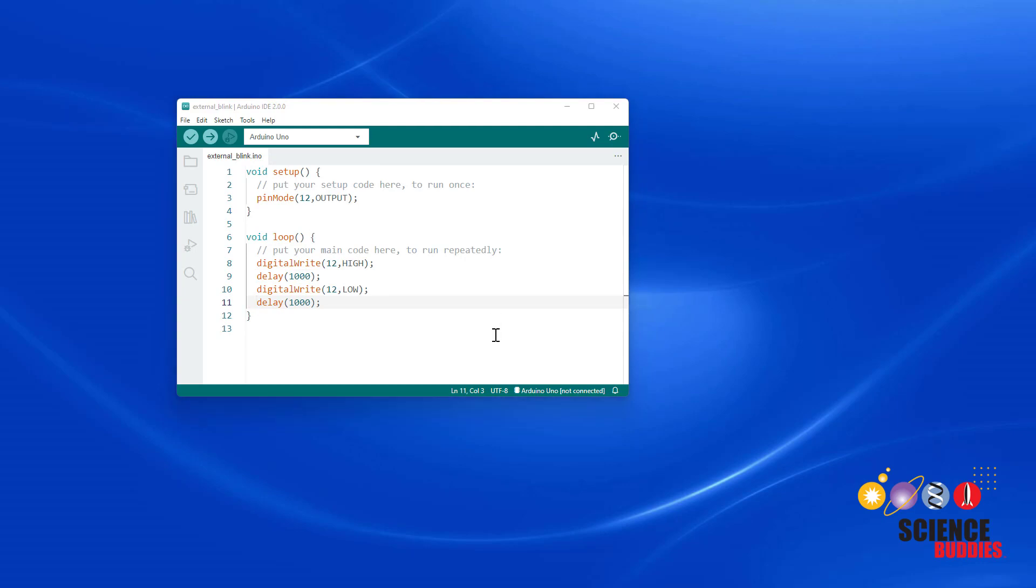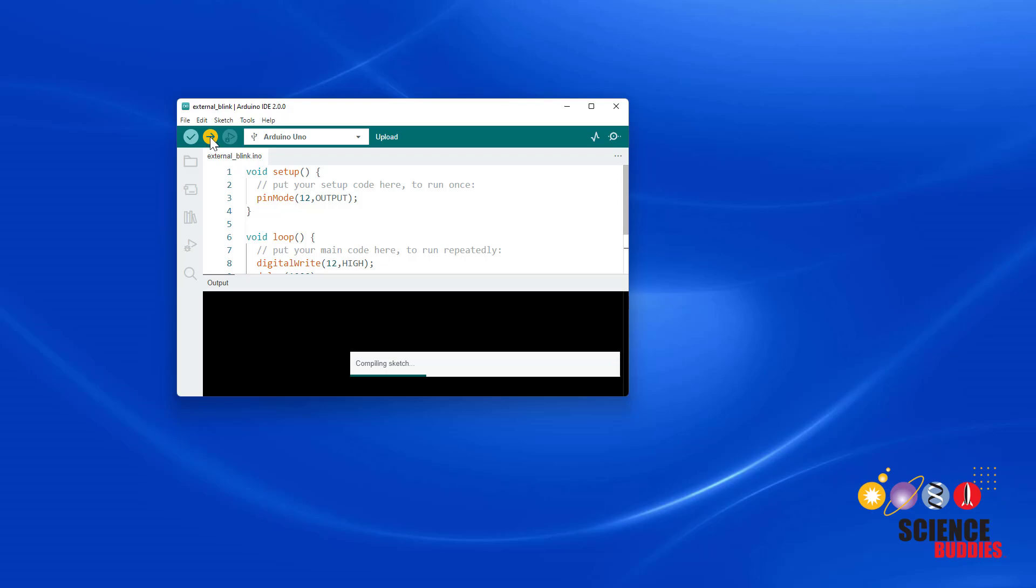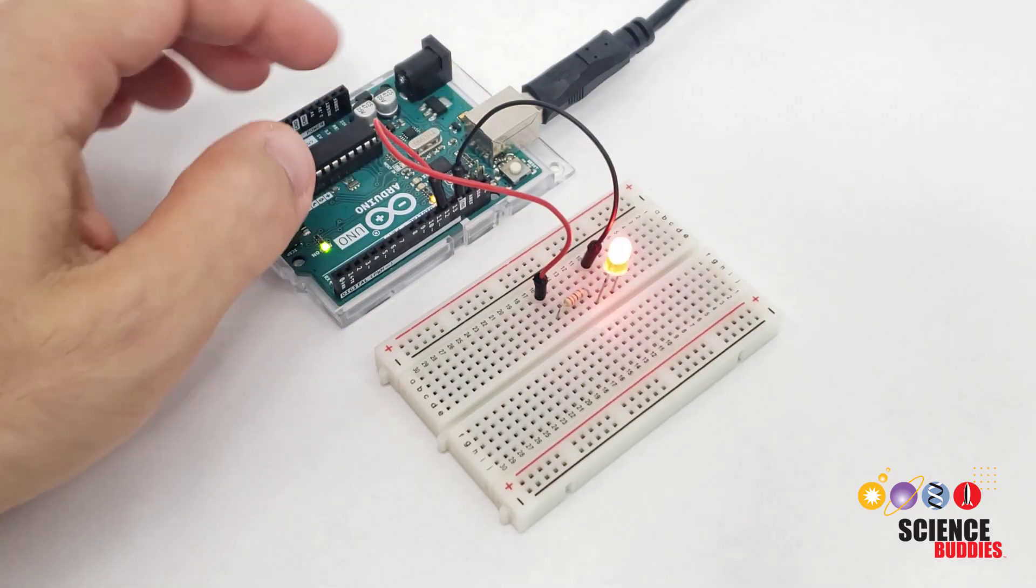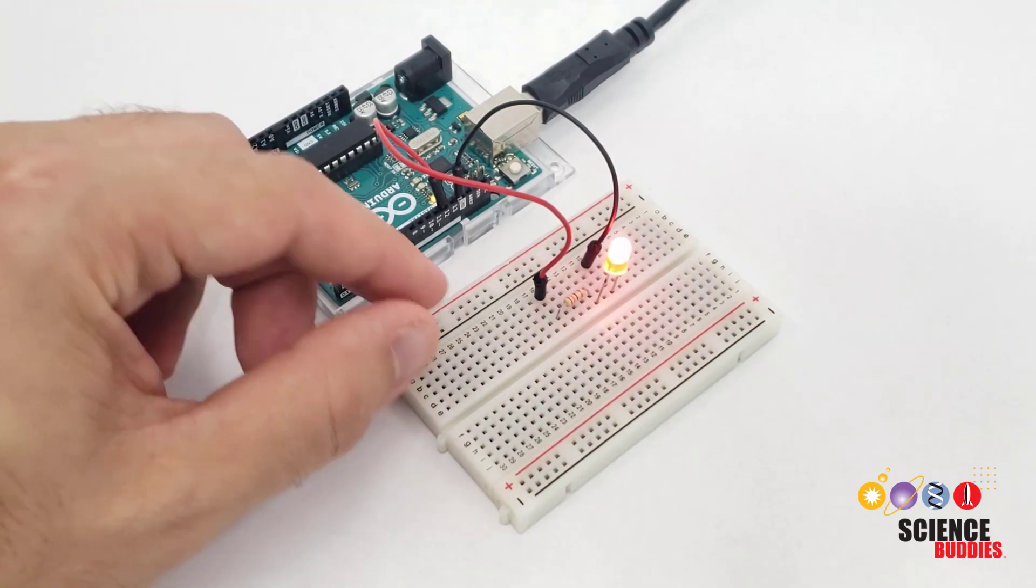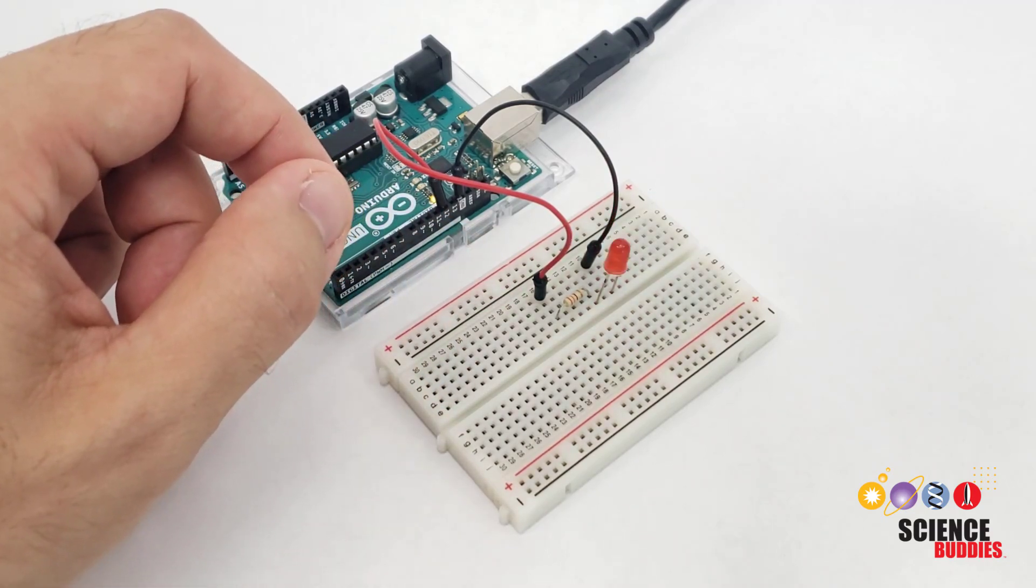Now, make sure you reconnect your Arduino if you had disconnected it when you were building your circuit. See that I have a notification here that my Arduino is not connected, so I've just plugged it back in, but then I need to reselect it from this drop down menu. After that, you can upload the code. Once you've connected your Arduino and uploaded the code, if you built your circuit correctly, the LED should blink on and off.